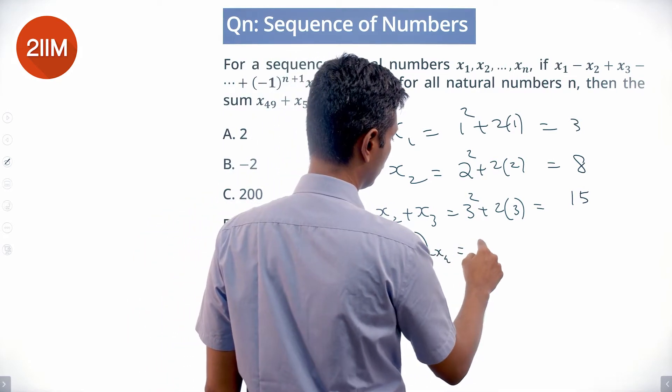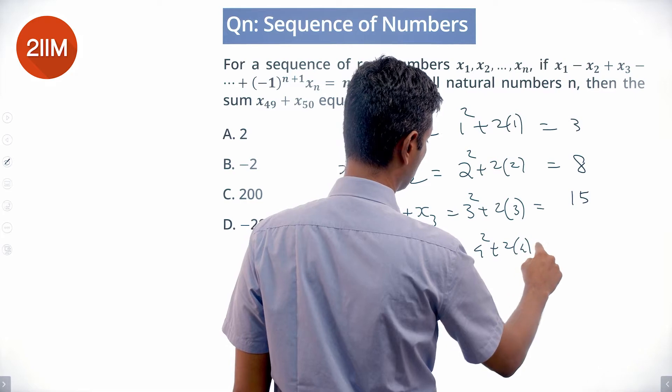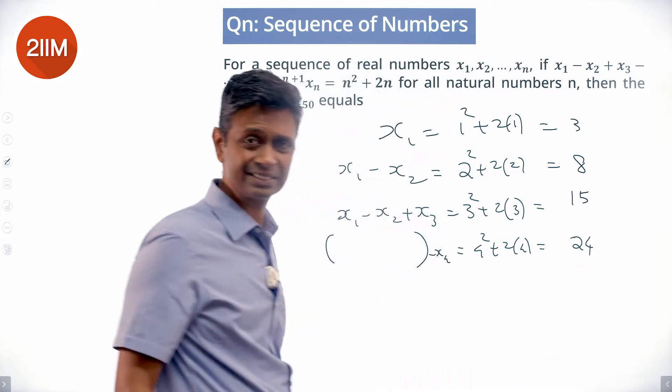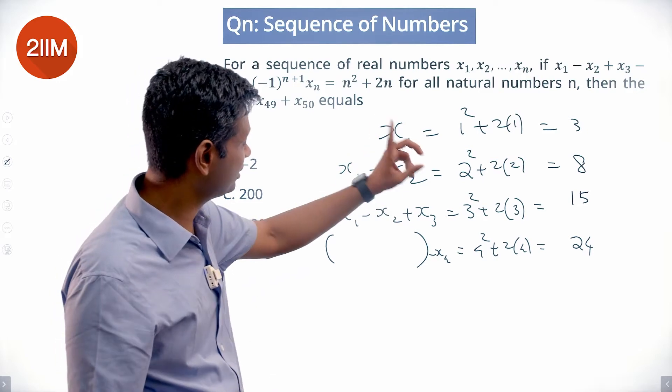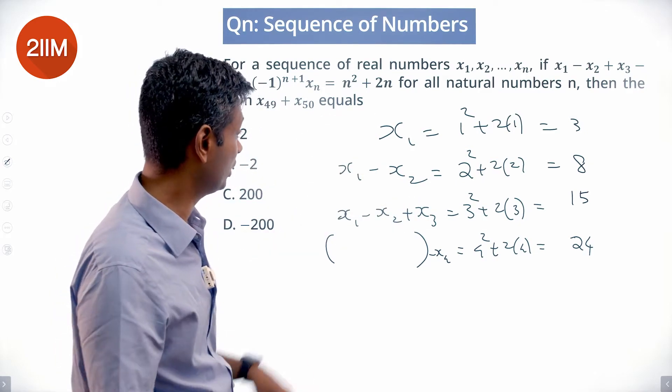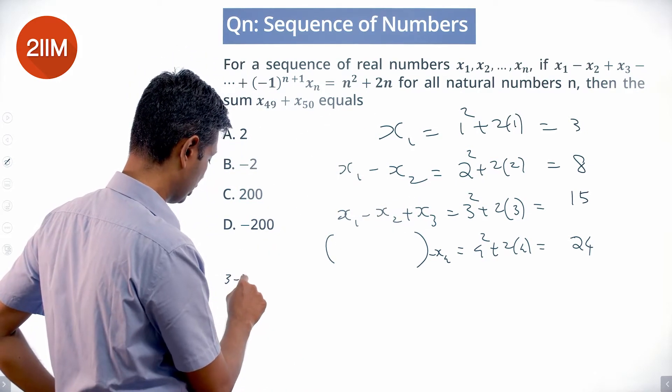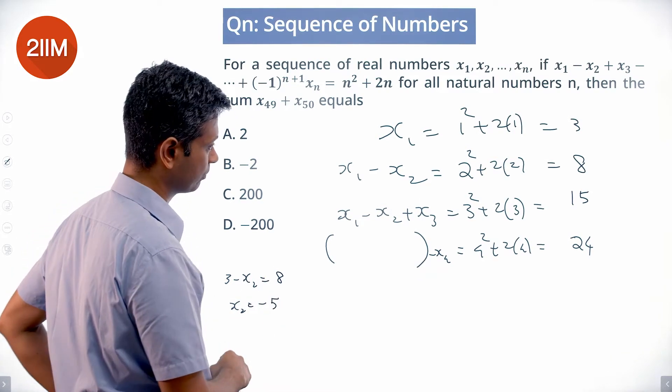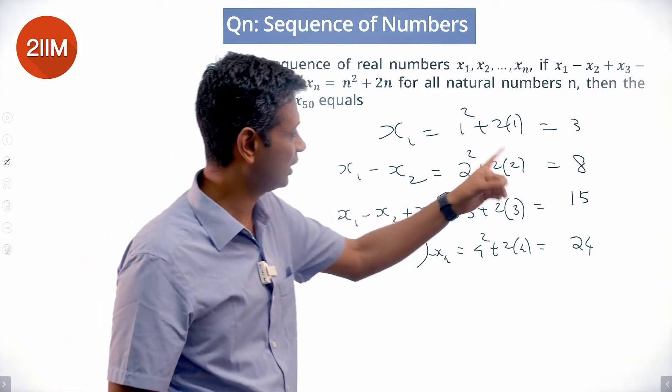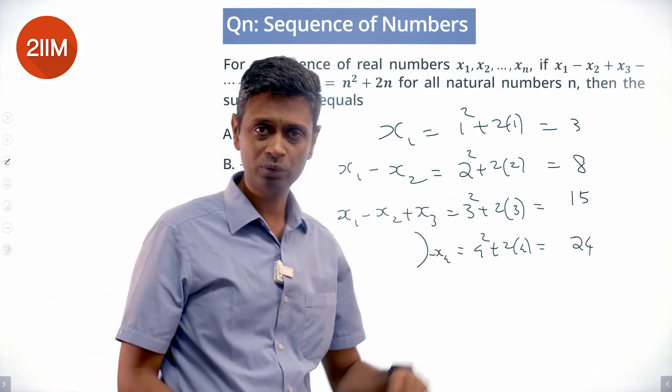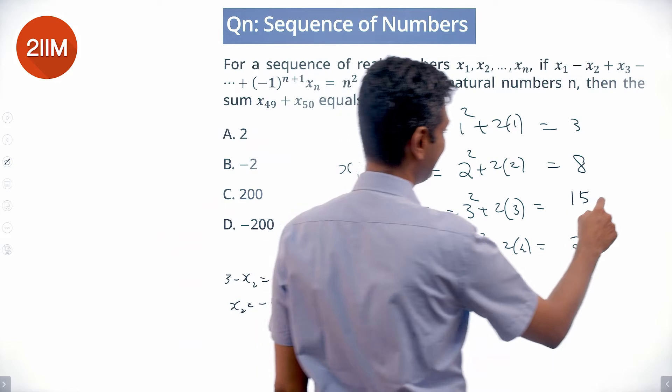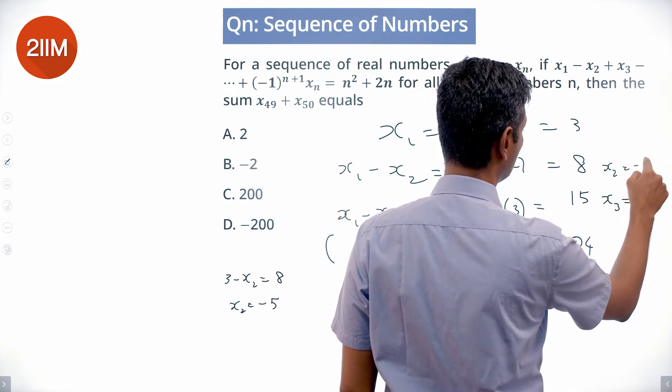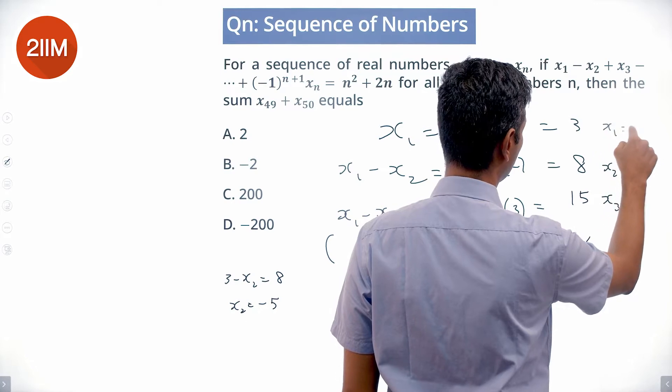This thing minus x4 is 4 squared plus 2 times 4, which is 16 plus 8, equals 24. Nice. x1 is 3, x1 minus x2 is 8, so 3 minus x2 is 8, or x2 is minus 5. x1 minus x2 is 8, add x3 we get to 15, so x3 is 7. x2 is minus 5, x1 is 3.